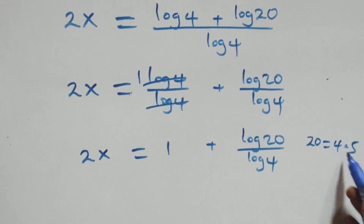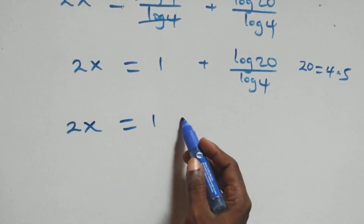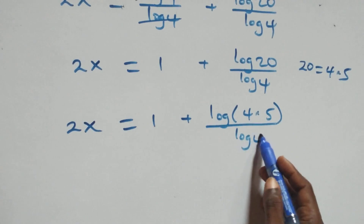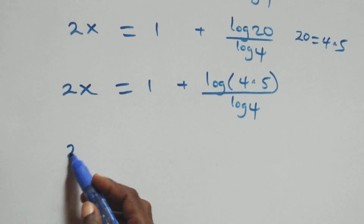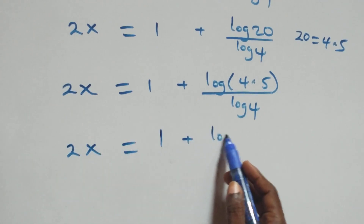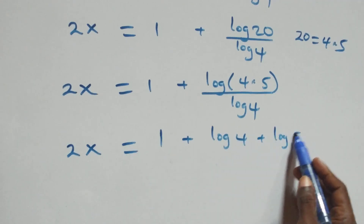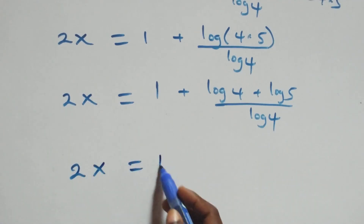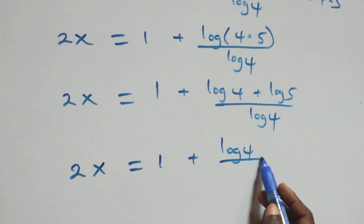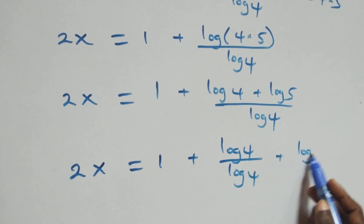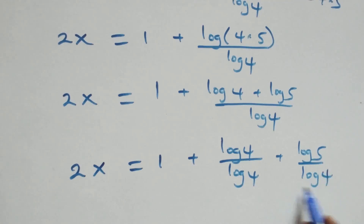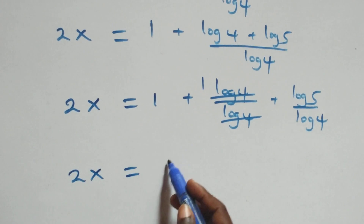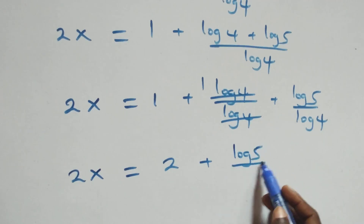Next step: 20 can also be written as 4 times 5, which implies we have 2x equals 1 plus log(4 times 5) over log 4. This also follows the rule, so we have 2x equals 1 plus log 4 plus log 5, all over log 4. We separate this into two fractions: 2x equals 1 plus log 4 over log 4 plus log 5 over log 4. Here log 4 cancels and we have 1 left, so this becomes 2x equals 1 plus 1 plus log 5 over log 4, that is 2x equals 2 plus log 5 over log 4.